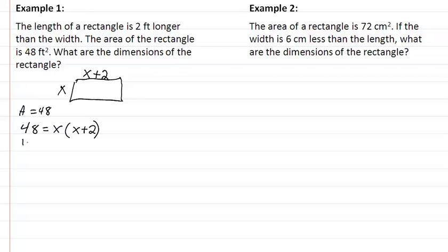So now we have 48 equal to x squared plus 2x. We want to get everything on one side, so we will subtract 48 from both sides. We have zero equal to x squared plus 2x minus 48.